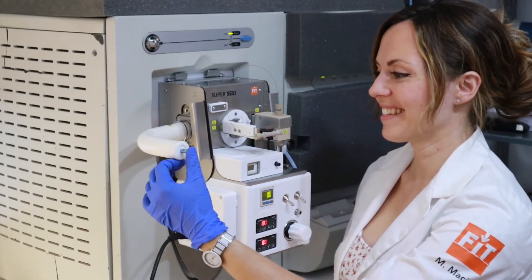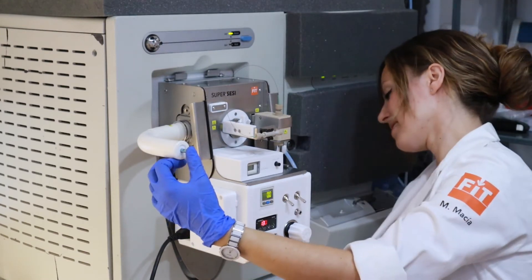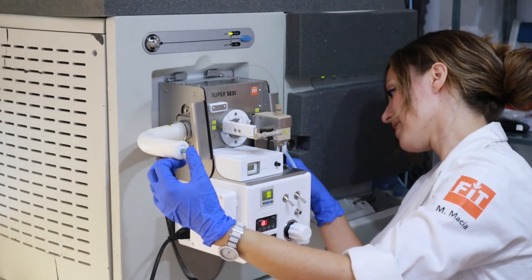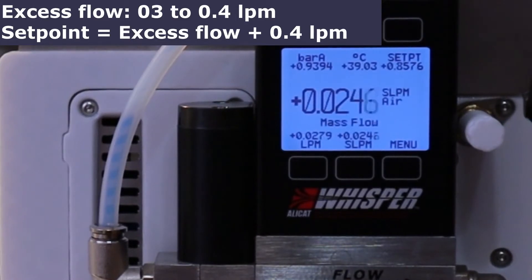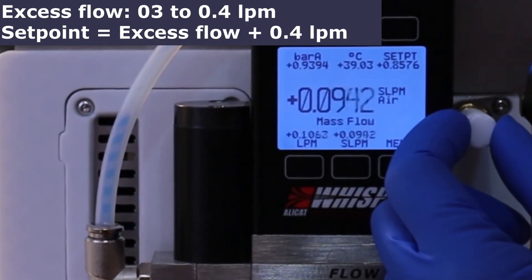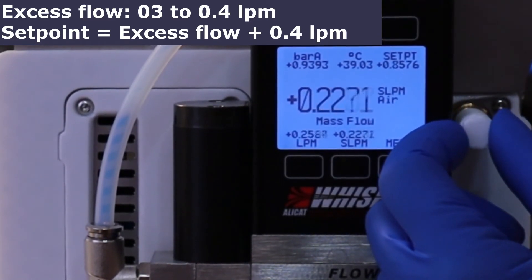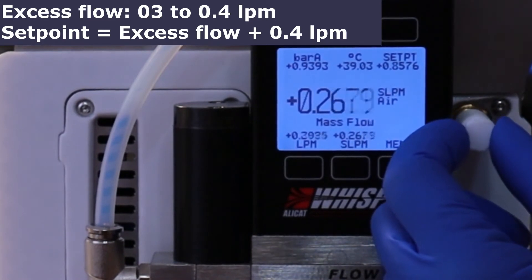To adjust the nitrogen excess gas, set the aux gas to 1 or 2 in the MS. Stop the flow coming out through the sample line with your thumb—use gloves for this. And adjust the needle valve until the reading of the mass flow controller is between 0.3 and 0.4 liters per minute. This doesn't have to be precise.